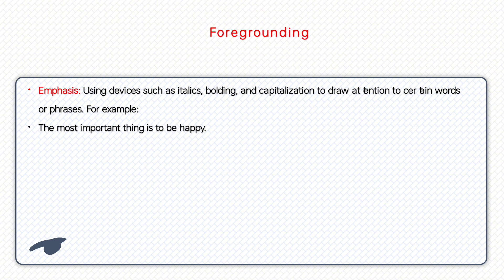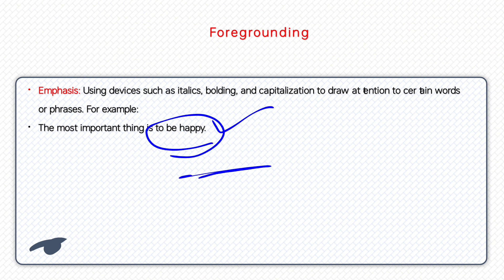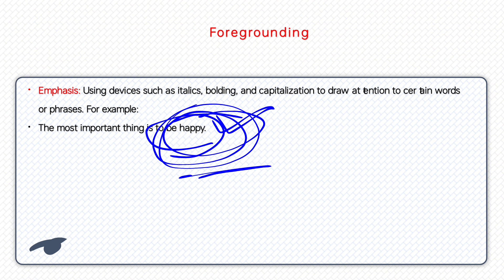Typography techniques such as italics, bolding, and capitalization are also used to emphasize certain words or phrases. For example, writing 'to be happy' in italics draws attention and emphasizes that phrase. Additionally, figures of speech such as metaphor, personification, and hyperbole can also be used as foregrounding techniques.